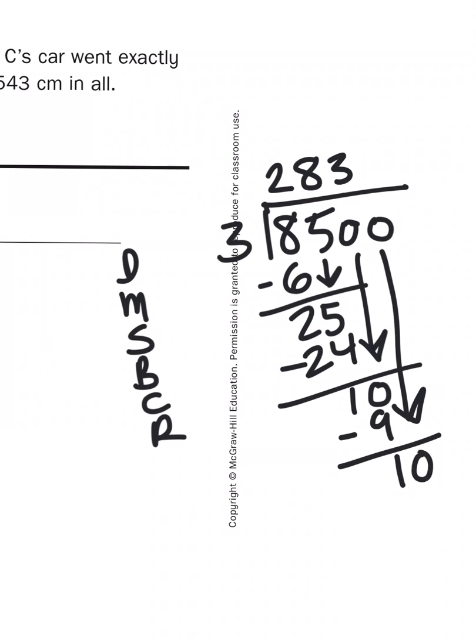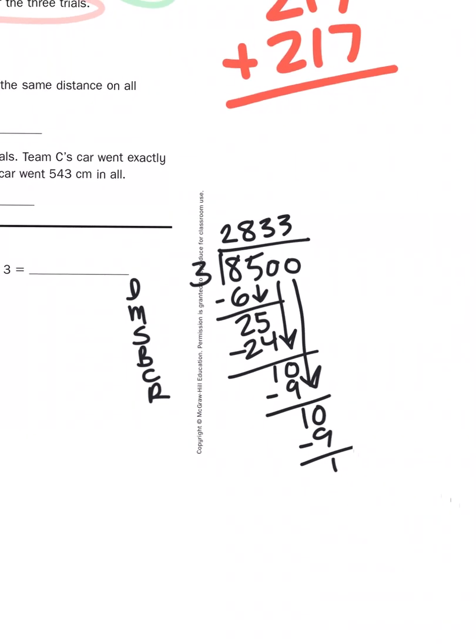And when I bring down that 0, I'm repeating the same process. So, I know how this is going to go. 3 times 3 is 9. Subtract. But now I have nothing else to bring down. So, this 1 becomes a remainder.